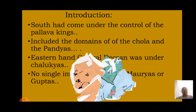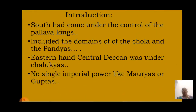As an introduction to South Indian Kingdoms: by the early 7th century, synchronizing with Harsha's reign in the north, the far south had come under the control of the Pallava kings of Kanchipuram. Pallava sovereignty included the domains of the Cholas and also the Pandyas — the Pallava kingdom or territories which also included the domains of Cholas and Pandyas.